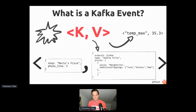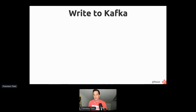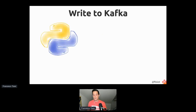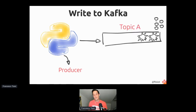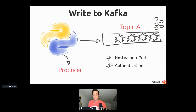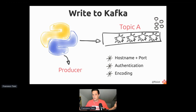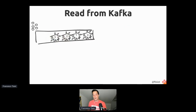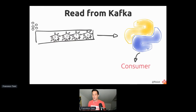By the way, I'm using pizza — I'm Italian, it's one of the few things I can talk about when creating technical content. So this was all the theory about Kafka. How do we write to Kafka? If we want to write to Kafka, we have a Python application called a producer that writes to a topic. To write to that topic, the application needs to know where to find Kafka — hostname and ports of the brokers — how to authenticate, and how to encode information from JSON into the raw series of bytes that Kafka uses.